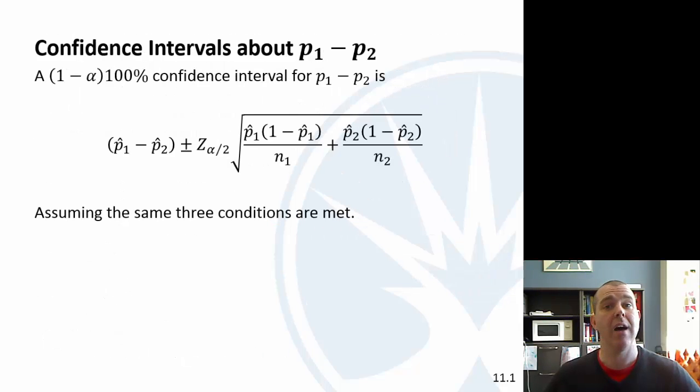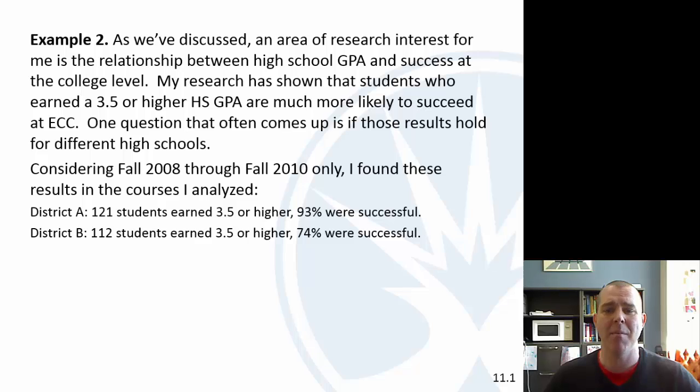We can also do a confidence interval. Now that we're doing inference, we can have hypothesis testing and confidence intervals. So I've got some different data here. One thing I've been interested in is the relationship between high school GPA and success at the college level. My research has shown that students who earned a 3.5 or higher in their high school GPA were more likely to succeed.